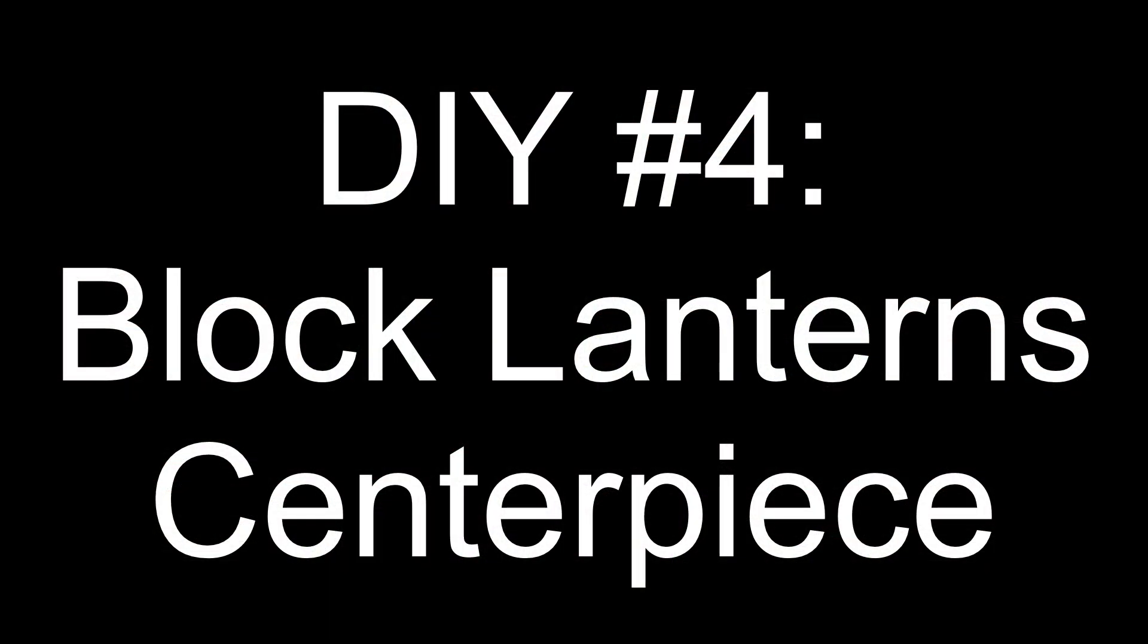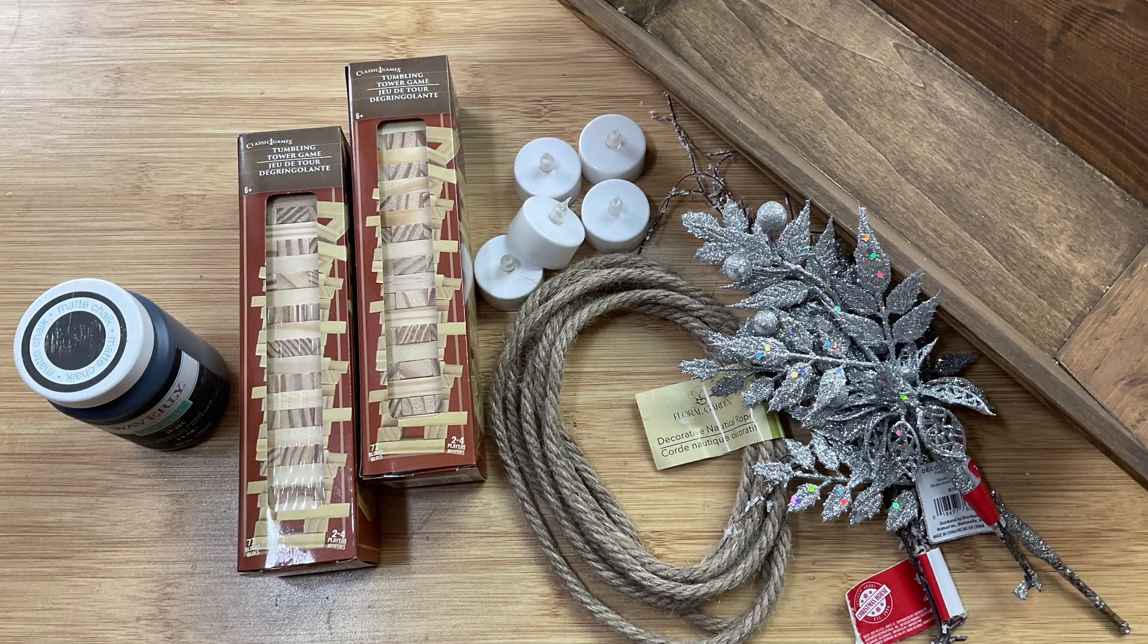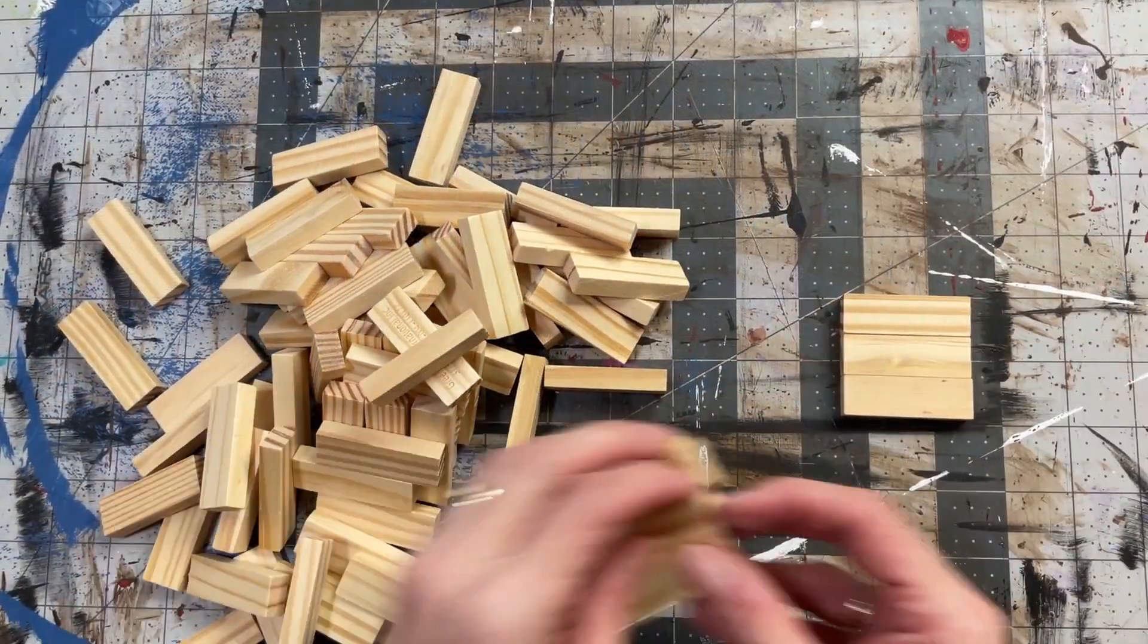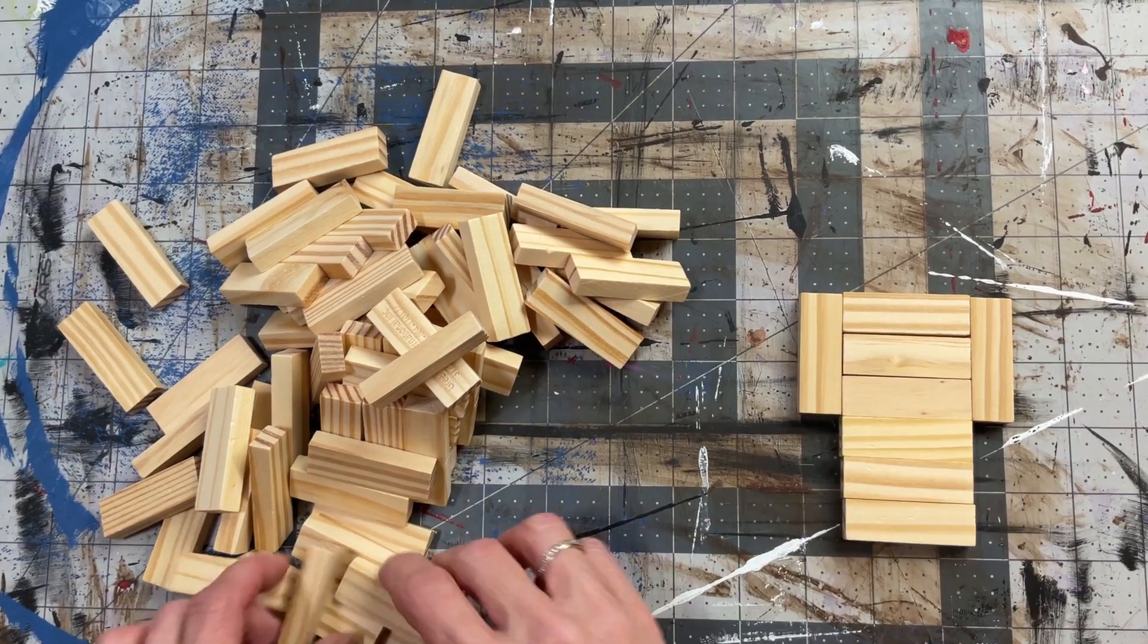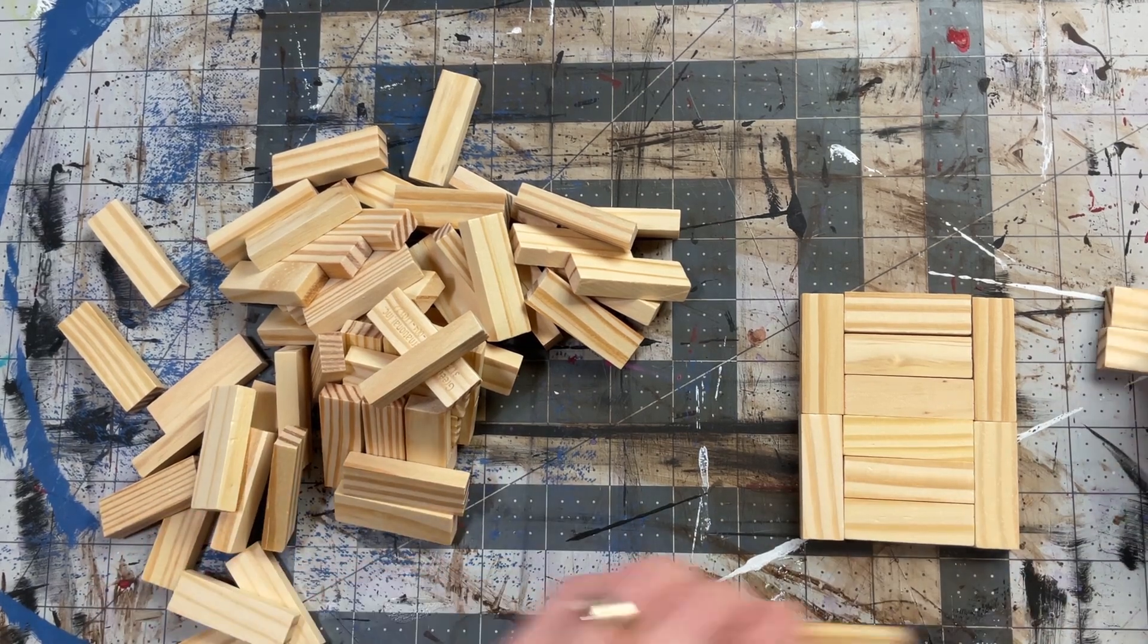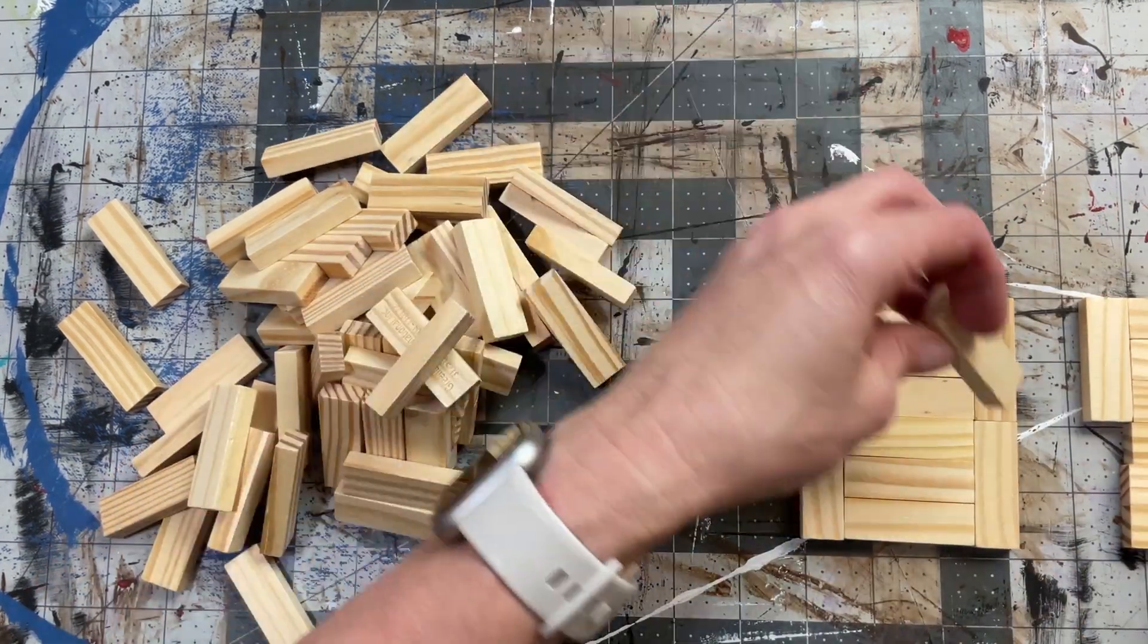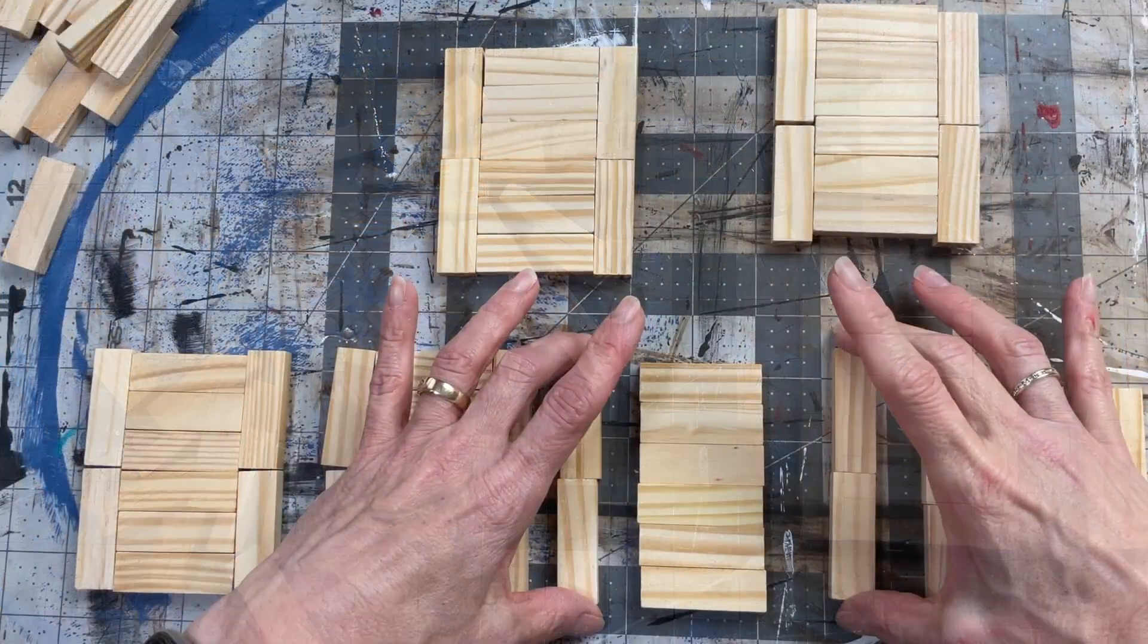For DIY number four, we're going to make some lanterns out of tumbling tower blocks and use them as a centerpiece. I'm going to use some candles, some tumbling tower blocks, a tray. Mostly here, I'm showing you how to make these little lanterns. Here you can see I have six blocks and then two on each of the long sides. That's ten blocks. For each lantern, you're going to need two of those platforms.